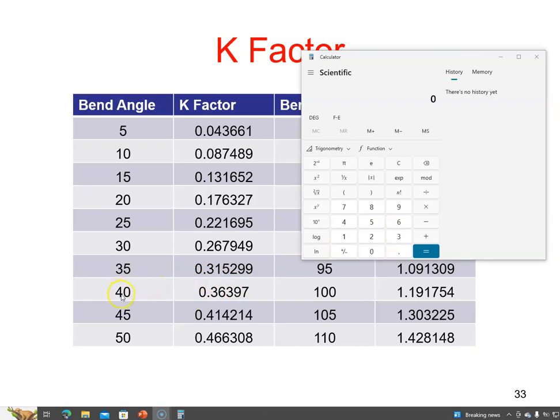If we take this bend angle here, 40 degrees—I'm saying it's the tangent of this angle divided by two—so 40 divided by 2, and then if I get the tangent of that, I get 0.36397, which matches the table.